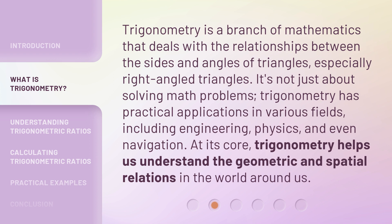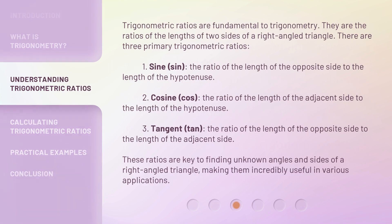At its core, trigonometry helps us understand the geometric and spatial relations in the world around us. Trigonometric ratios are fundamental to trigonometry. They are the ratios of the lengths of two sides of a right-angled triangle. There are three primary trigonometric ratios.